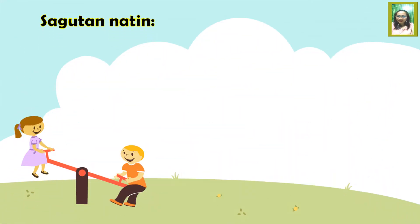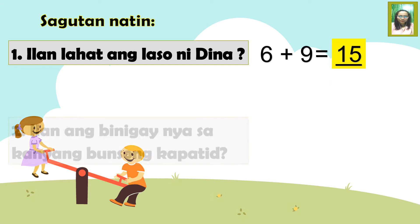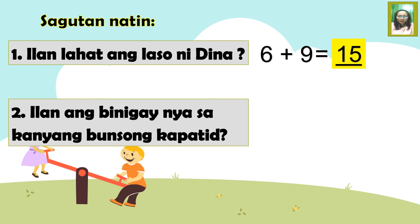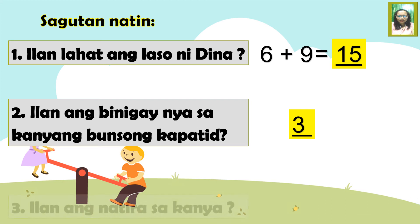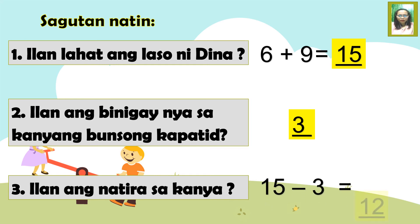Ito ang ilan sa mga tanong patungkol sa sitwasyon. Ilan lahat ang laso ni Dina? Tama, ito ay labin lima. Ilan ang ibinigay niya sa kanyang bunsong kapatid? Tama, tatlo. Ilan ang natira kay Dina? Magaling! Ito ay labing dalawa.